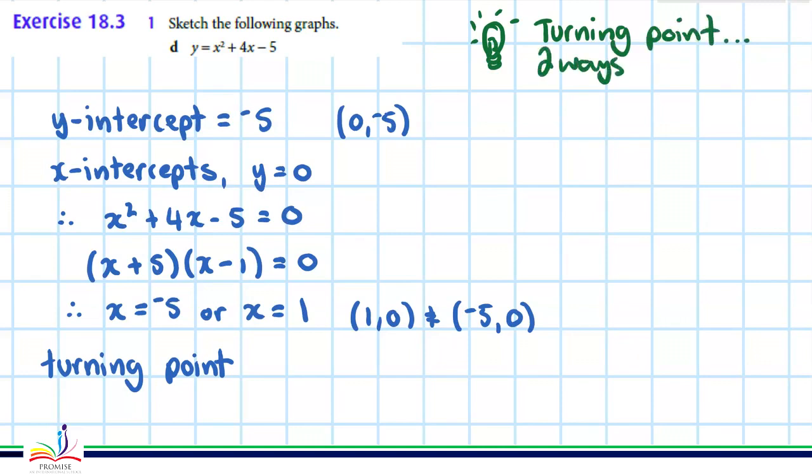We can do that pretty easily. Halfway between the roots, just take the two values, minus 5 and 1, add them together—minus 4—divided by 2, and you get negative 2. So x equals negative 2.